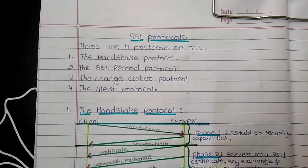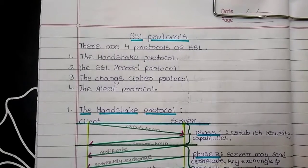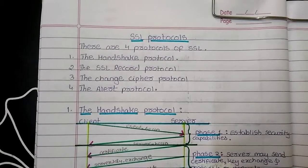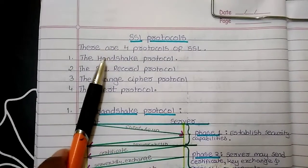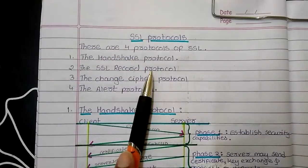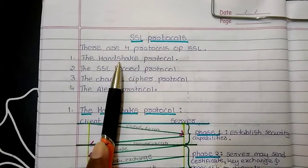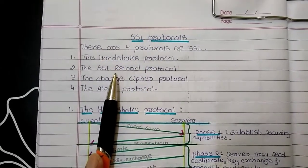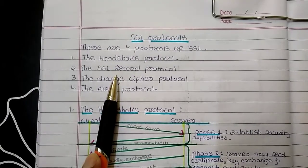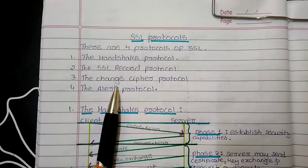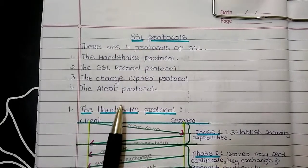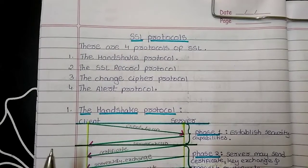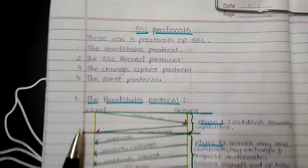Hello everyone, now we will see the concept of SSL protocol. This concept we have already seen in the previous video. Now let us go in detail. As we know, there are four different protocols available with SSL: the first one is handshake protocol, second one is SSL record protocol, third one is change cipher protocol, and fourth one is alert protocol.